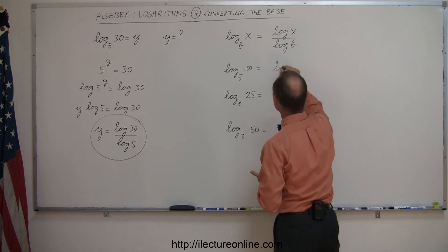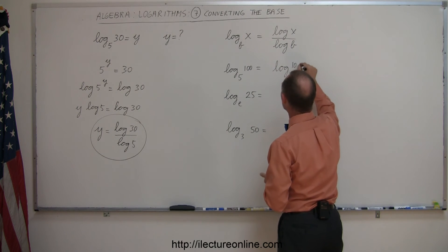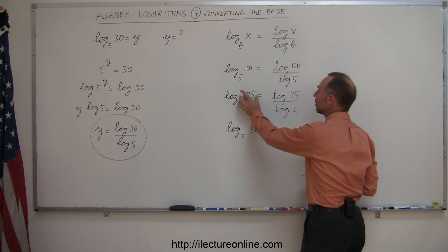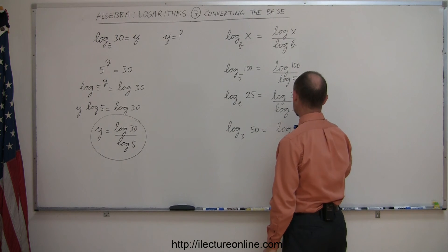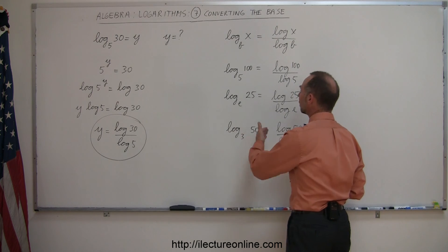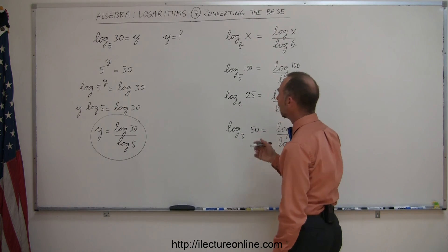Over here, we can say, well, that's equal to the log of 100 divided by the log of 5. Here, this is equal to the log of 25 divided by the log of e. Again, always take the log of this number, divide by the log of the base, and finally, the log of 50 divided by the log of 3. And so that's how we easily convert from any base to base 10.